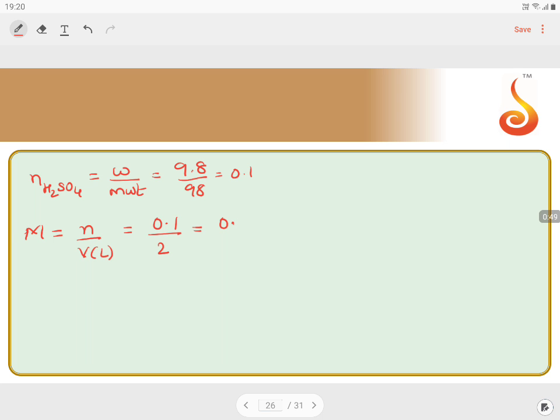1 by 2 is 0.5. This becomes 0.05 molar. So the first one is completed, molarity.